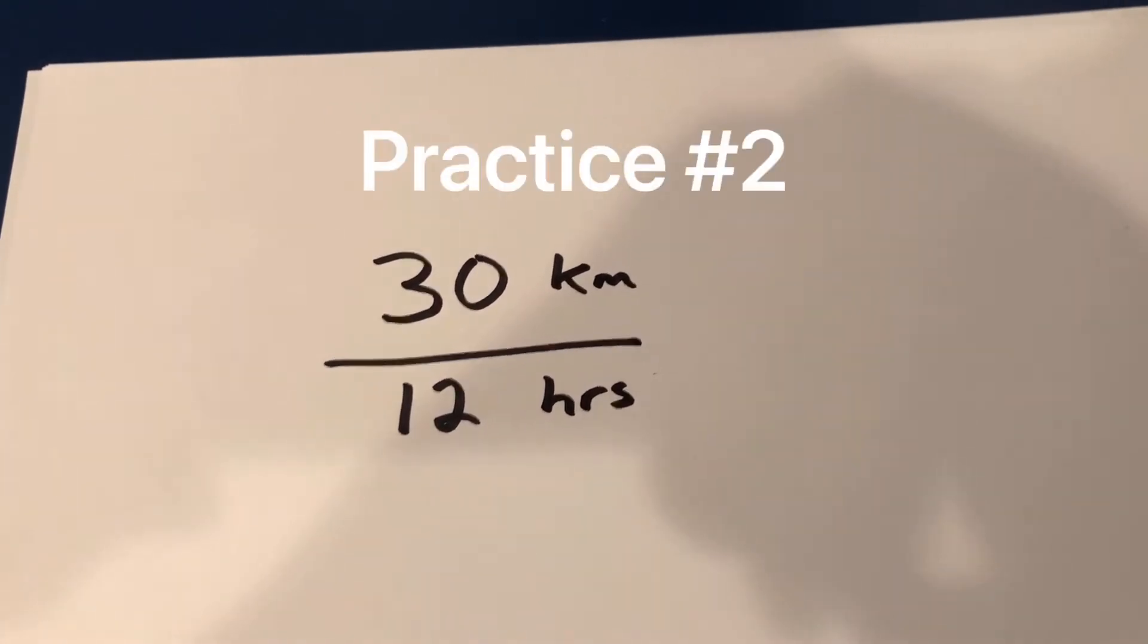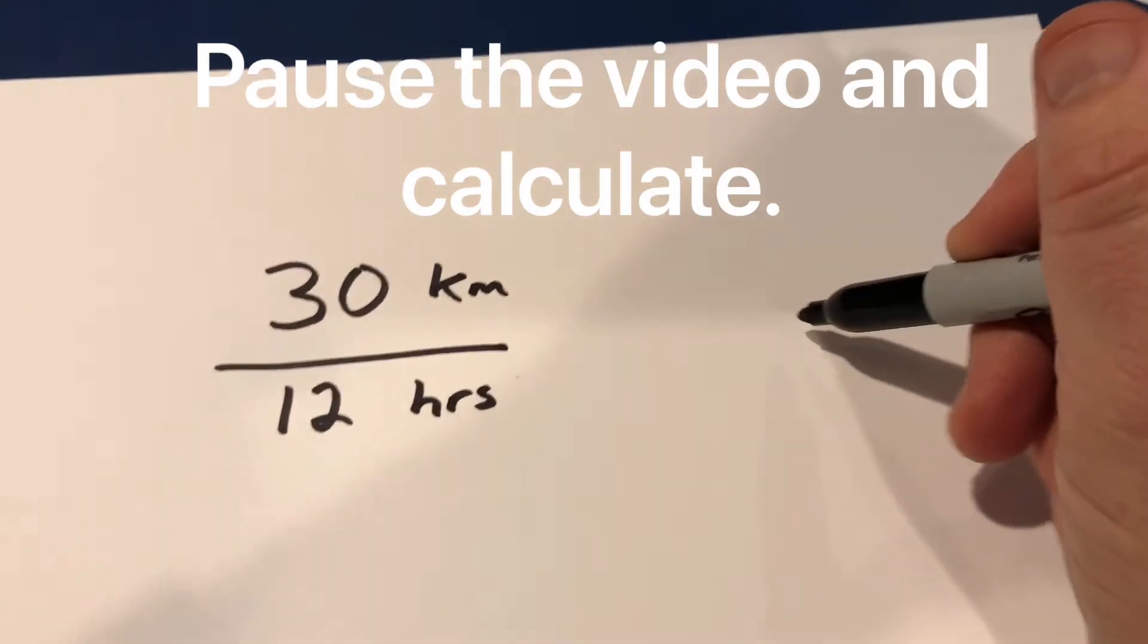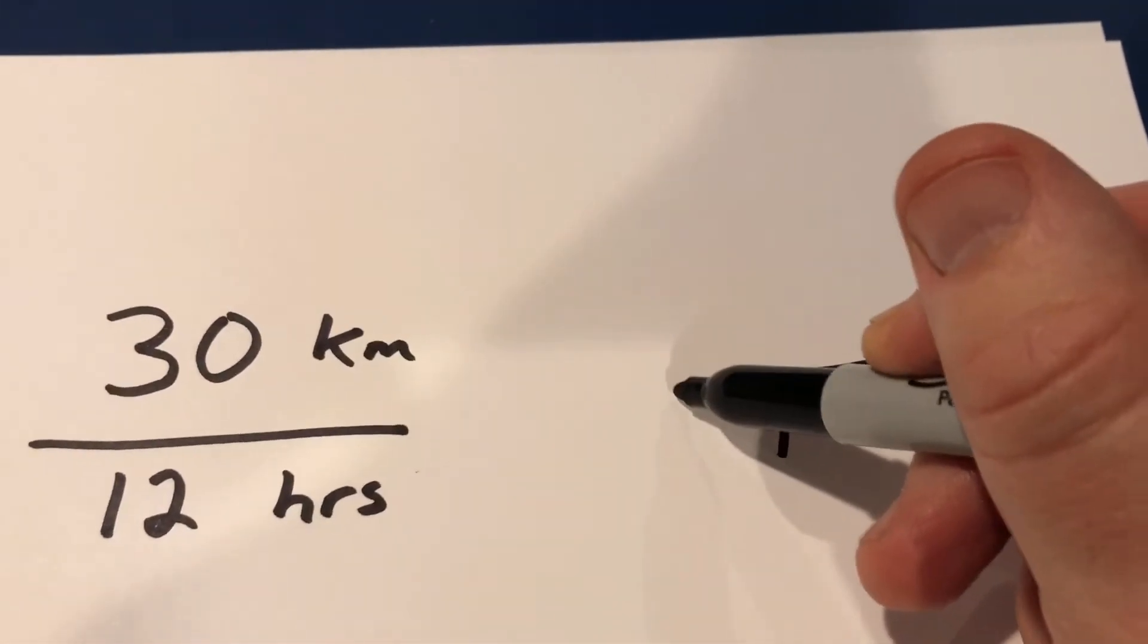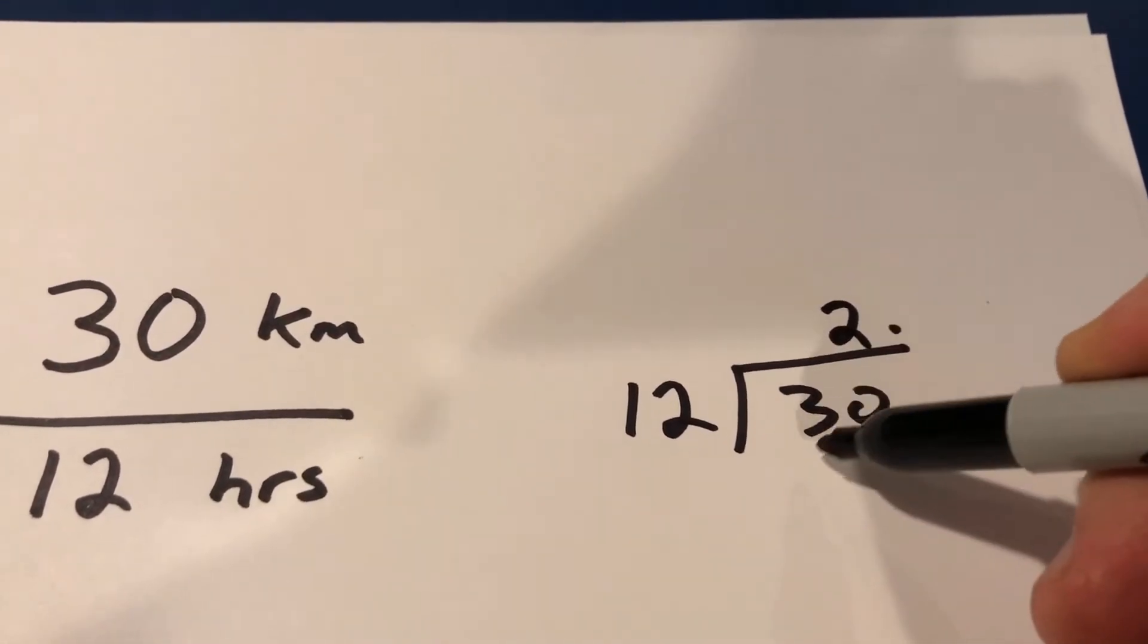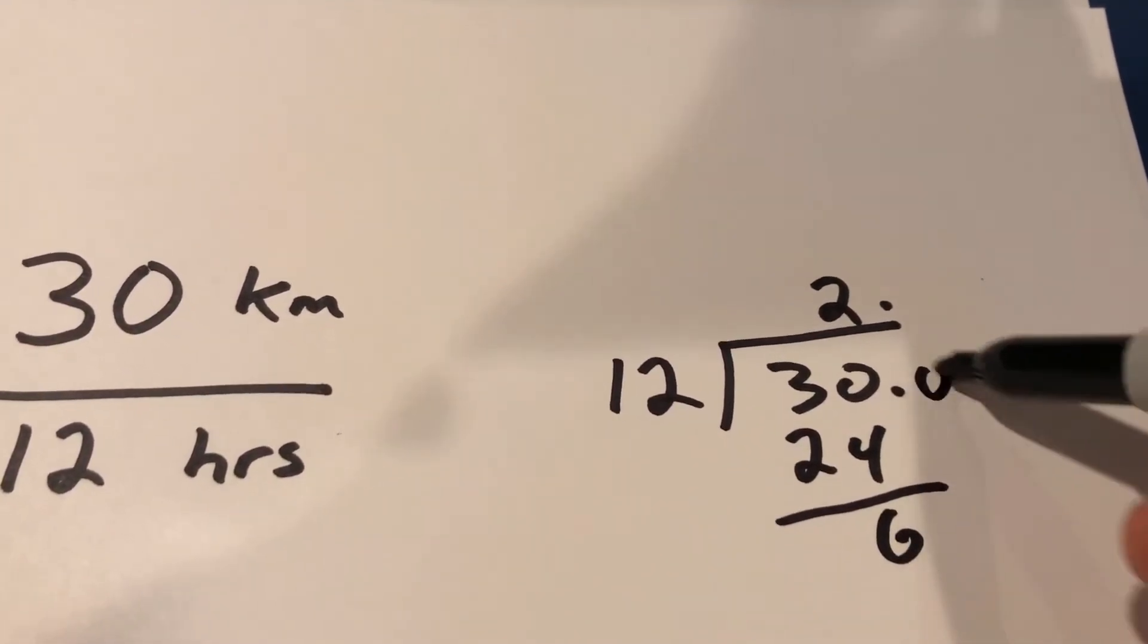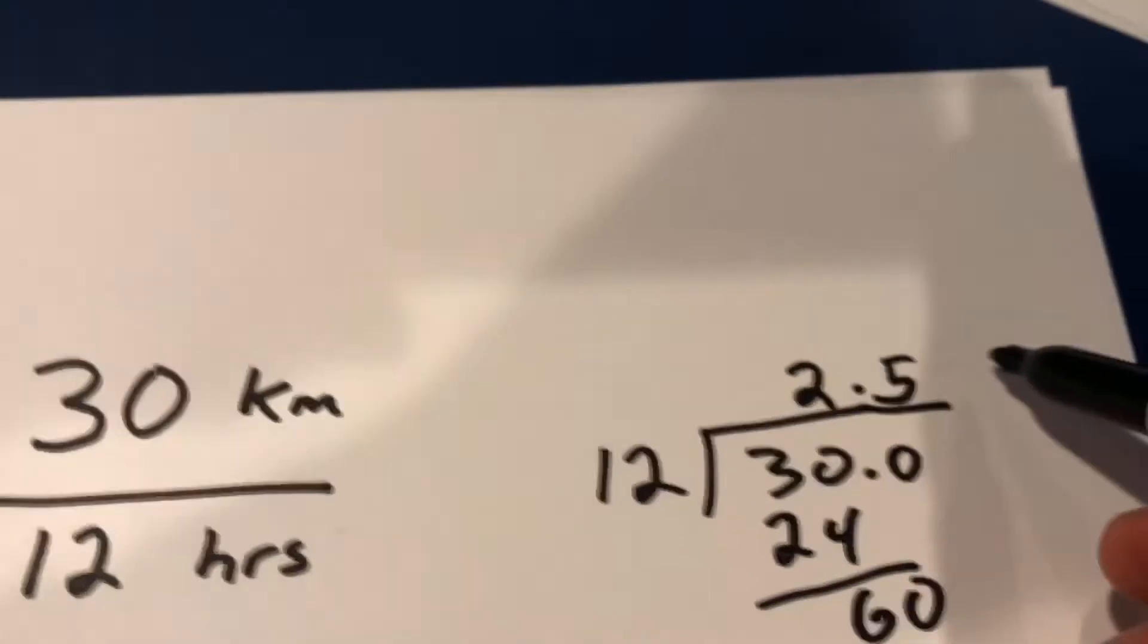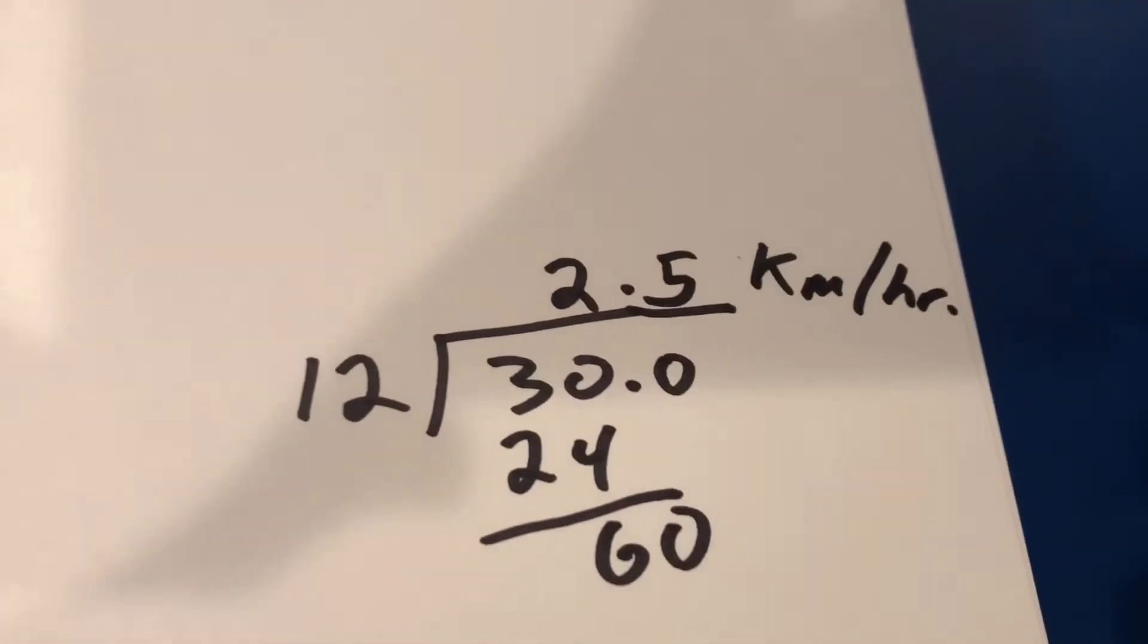And let's say I traveled 30 kilometers in 12 hours. I'm probably walking pretty slow. So I would set that up. 30. I'm going to add a decimal because I think I'm going to need it. Put a decimal below and above. And then I divide that by 12. 12 goes into 30. 24. Remain of 6. Bring down a 0. 2. 0.5. I'm talking kilometers per hour. There it is. 2.5 kilometers per hour.